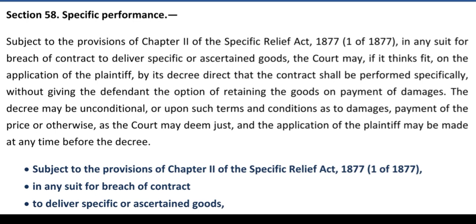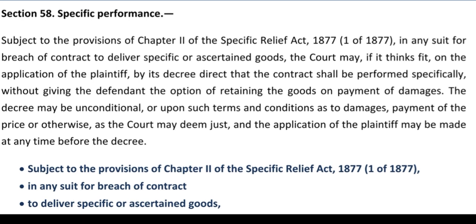Section 58 — specific performance. Subject to the provisions of Chapter 2 of the Specific Relief Act 1877, in any suit for breach of contract to deliver specific or certain goods, the court may, if it thinks fit, on the application of the plaintiff by its decree direct that the contract shall be performed specifically, without giving the defendant the option of retaining the goods on payment of damages. The decree may be unconditional or upon such terms and conditions as to damages, payment of price or otherwise as the court deems just, and the application may be made at any time before the decree.